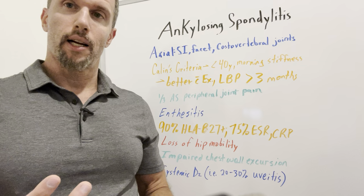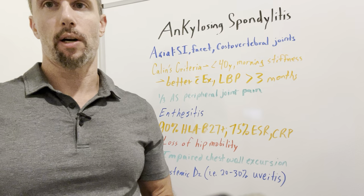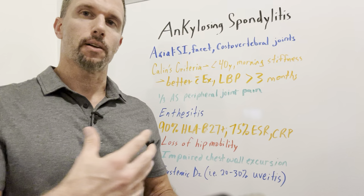The specific MRI needed early on is called a short tau inversion recovery (STIR) sequence MRI. With this, you can actually see cartilage changes and bone marrow edema indicative of this particular disease.